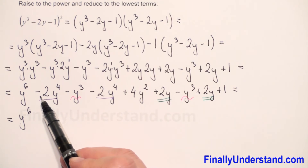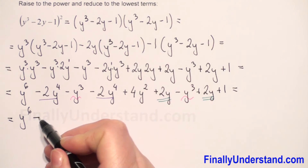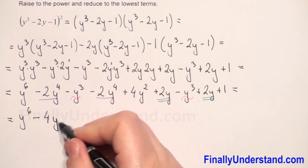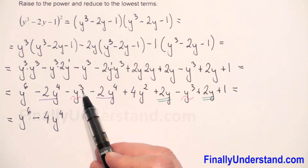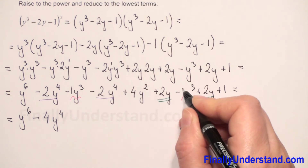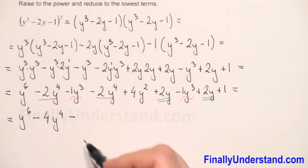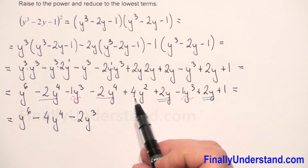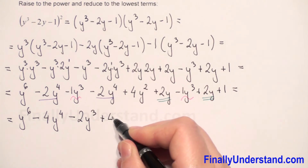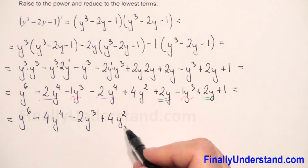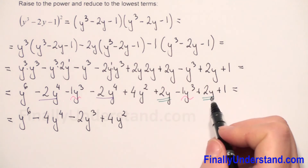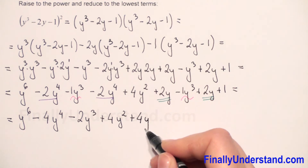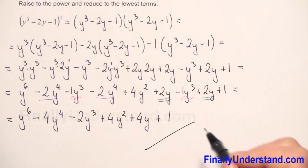Both y⁴ terms are negative, so we keep the negative sign and add the coefficients: 2 plus 2 is 4, giving negative 4y⁴. For y³: no written coefficient means an invisible 1, both terms are negative, so 1 plus 1 plus 1 is 3, giving negative 3y³. Next, only one 4y² term so we copy it. Then 2y plus 2y: both positive, 2 plus 2 is 4, giving 4y. And plus 1. This is the final solution.